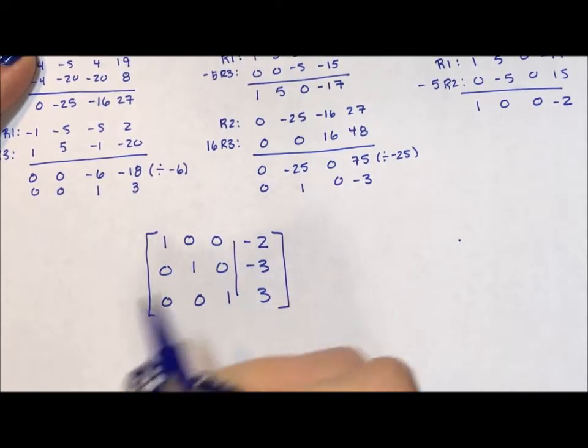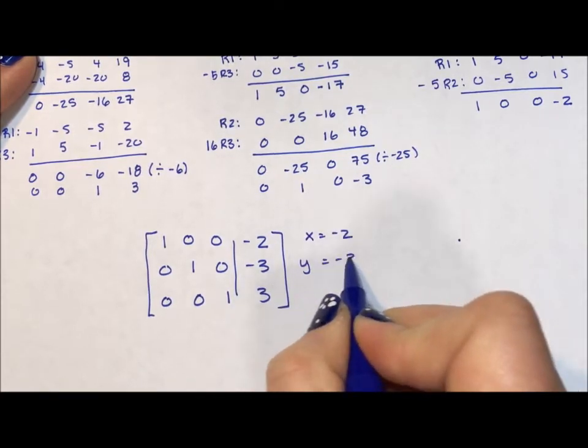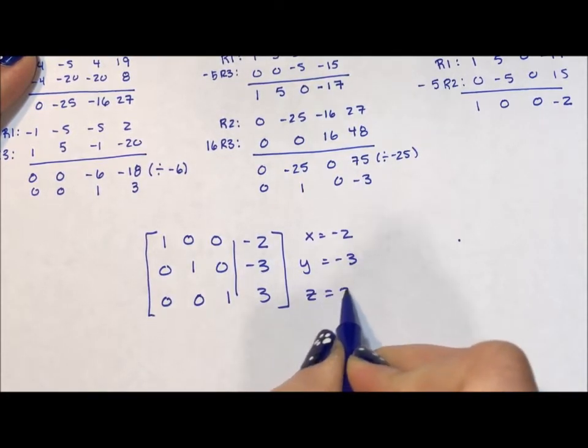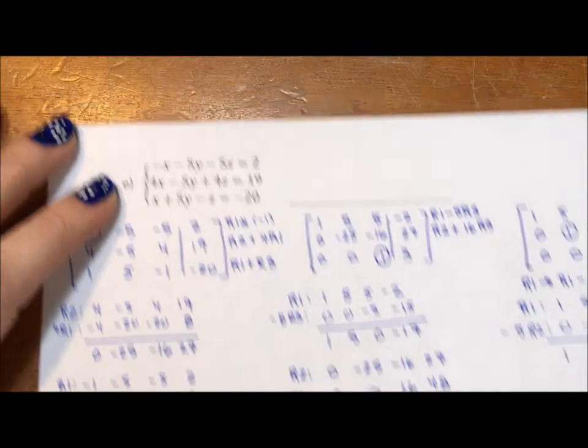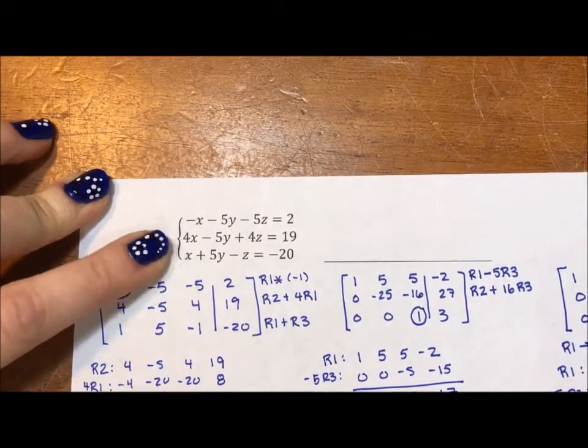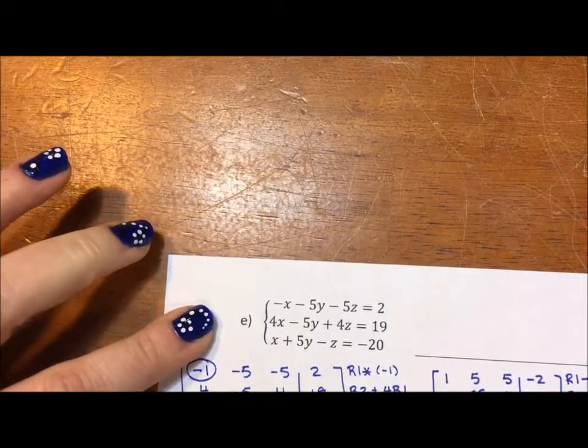If I were to translate this back into a system of equations, it would be that x equals -2, y equals -3, and z equals 3. I want to check that. I'm going to come back and check that with my original system of equations.